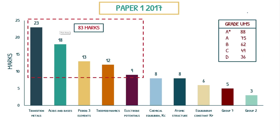This right here shows the UMS grade boundaries — UMS stands for Uniform Mark Scale — essentially measuring how difficult the paper was on average as a nation, and then they generate these grade boundaries. For example, in 2017, an A star was 88 marks out of 105, an A was 75, a B was 62, and so on.